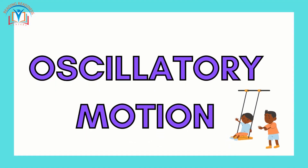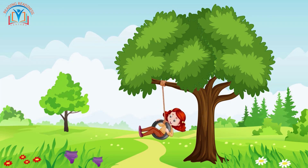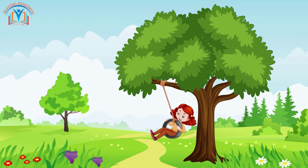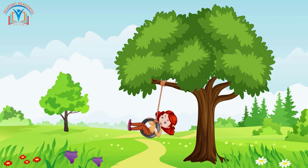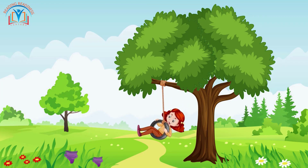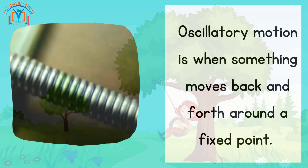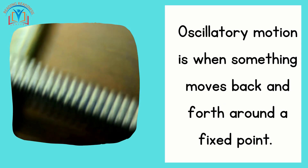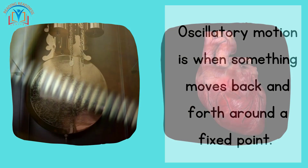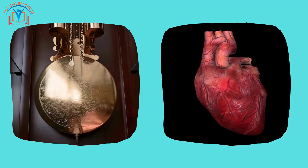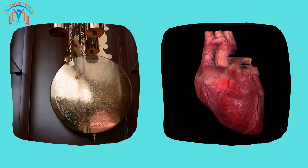Have you ever been on a swing at the park? It goes back and forth, just like a pendulum. That's oscillatory motion! Oscillatory motion is when something moves back and forth around a fixed point. Examples of oscillatory motion include a pendulum swinging and a person's heart beating.